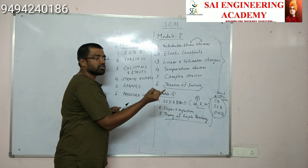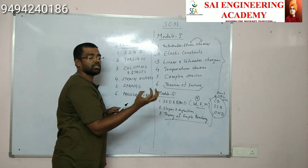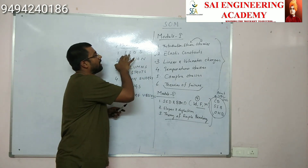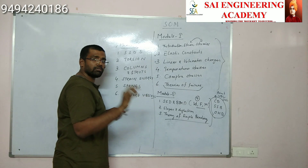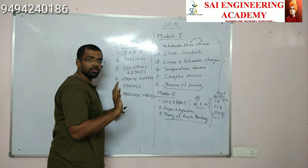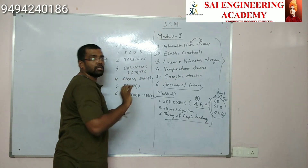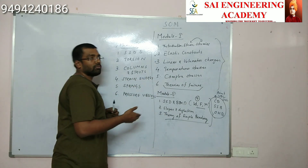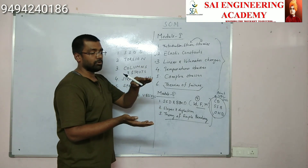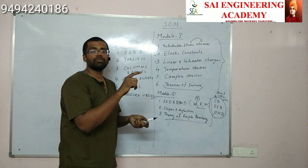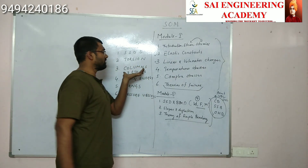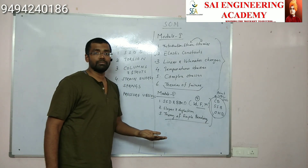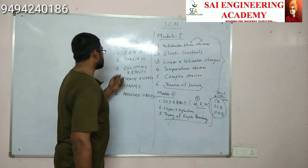Coming to module 3 in detail: for shear stress distribution diagram, we look at I cross-section, T cross-section, circular cross-section, or square sections to see how shear stress is distributed. For torsion, we mainly study circular shafts and how torsion plays an important role. For columns and struts — long column, short column, Euler equation, Rankine equation, how constants vary, critical load for fixed-fixed beams, fixed-free beams, or roller-hinge supports, and why we consider minimum moment of inertia.